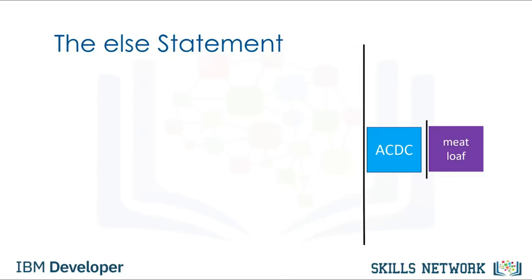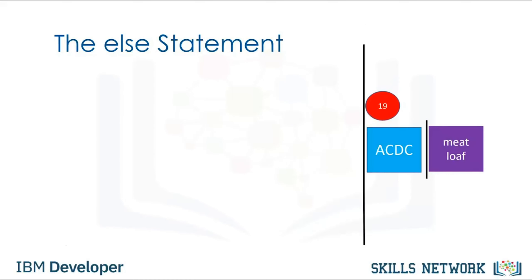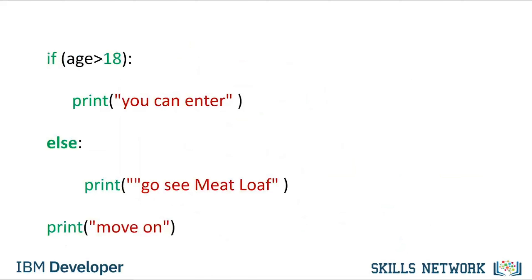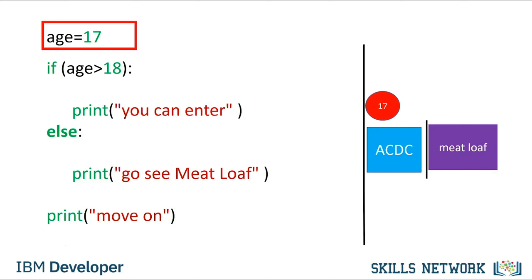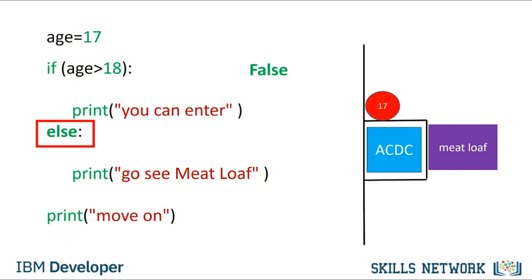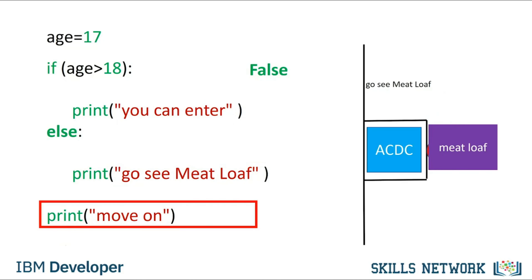The else statement will run a different block of code if the same condition is false. Using the ACDC concert analogy: if the user is 17, they cannot go to the ACDC concert, but they can go to the meatloaf concert. If the individual is 19, the condition is true and they can enter the ACDC concert. The syntax of the else statement is similar — we simply append the statement else and add the expression to execute with an indent. For the case where age is 17, the statement is false, so we progress to the else statement, which corresponds to the individual attending the meatloaf concert.